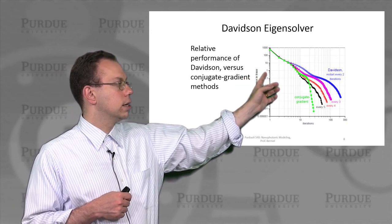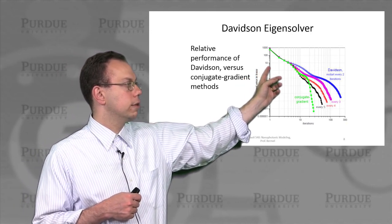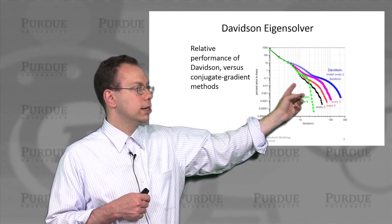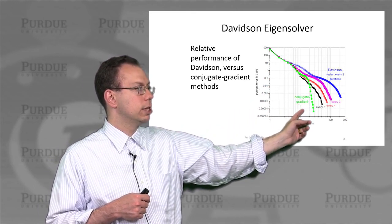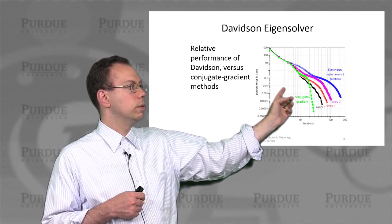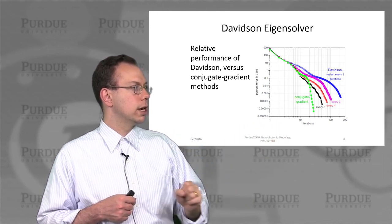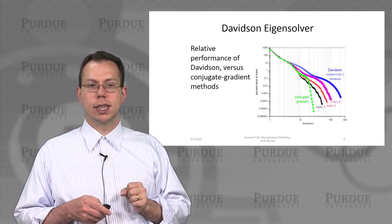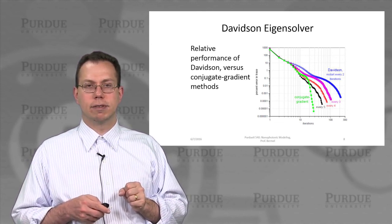And then if we look at the performance of Davidson compared to conjugate gradient, it turns out that Davidson may kind of break even with conjugate gradient at small number of iterations. But at the end of the day, it doesn't actually converge that much better. There is kind of maybe a small window where it looks a little better around 10 to 20 iterations. But overall, we won't end up using that because it's not as big of a benefit.